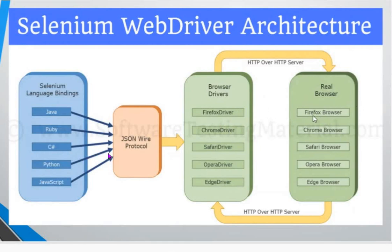The browser drivers include Firefox Driver, Chrome Driver, and Safari Driver. Every browser has its own dedicated driver — for example, the Firefox browser has its own Firefox Driver and Chrome browser has its own Chrome Driver. JSON Wire Protocol is used to communicate between the client library and the browser driver.